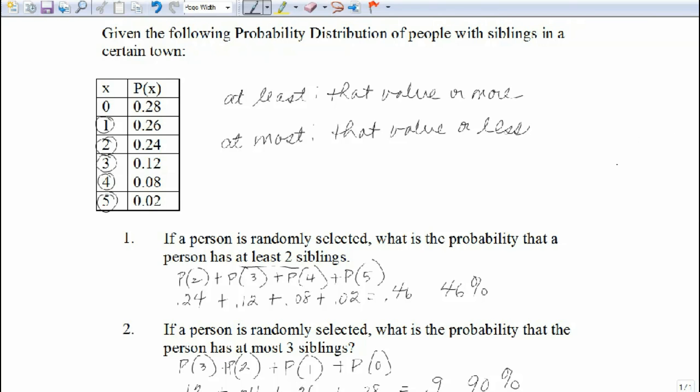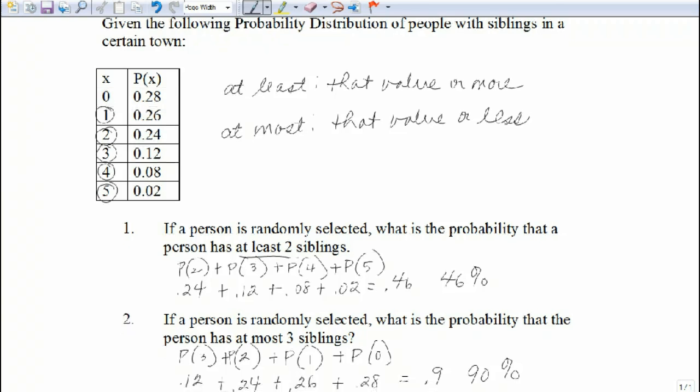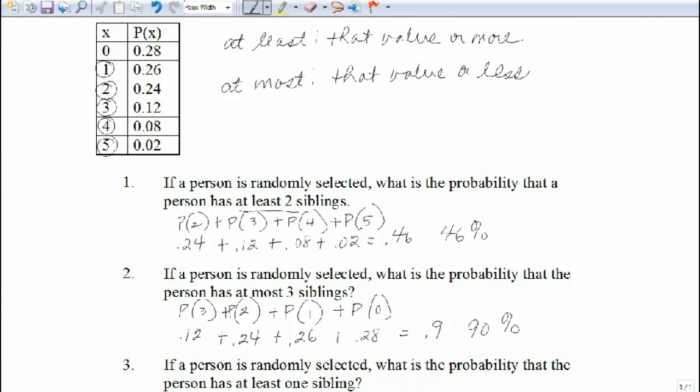Now we could go ahead and go through this and add up all those probabilities. And as a matter of fact, for question number one, we said at least two. And that gave us two, three, four, and five. All we would have to do is add one to that to get our answer. So let's just quickly do that to see one way of doing it.